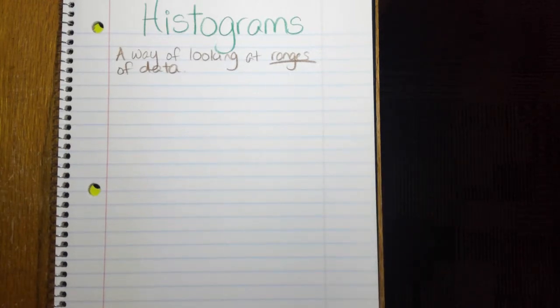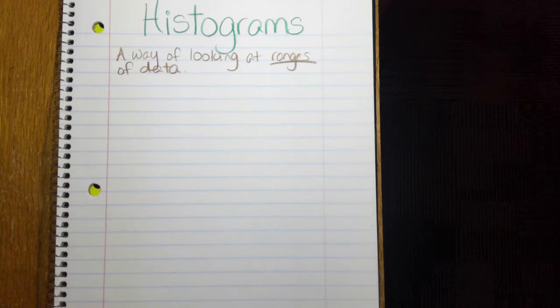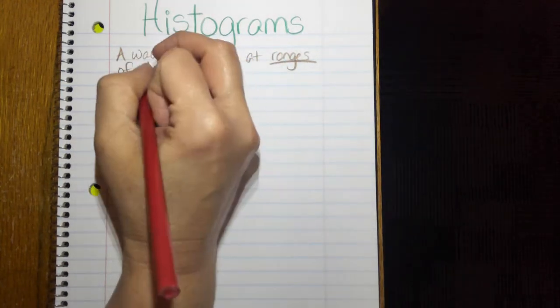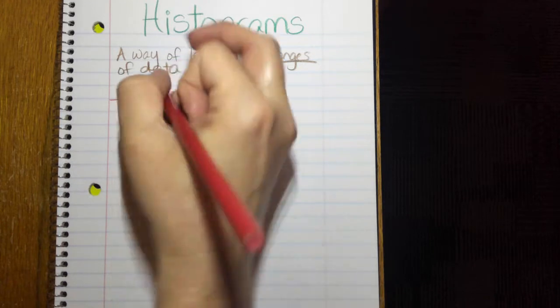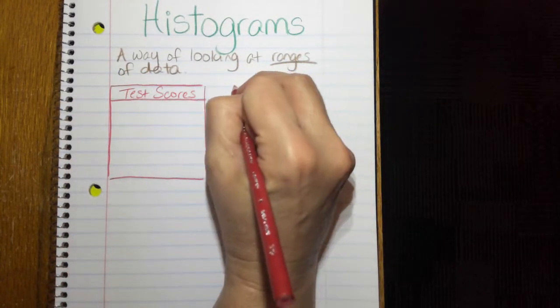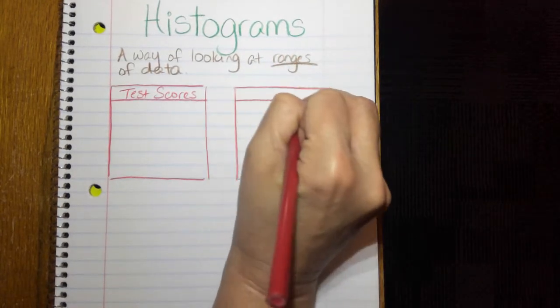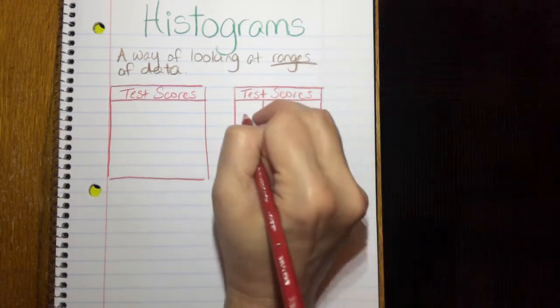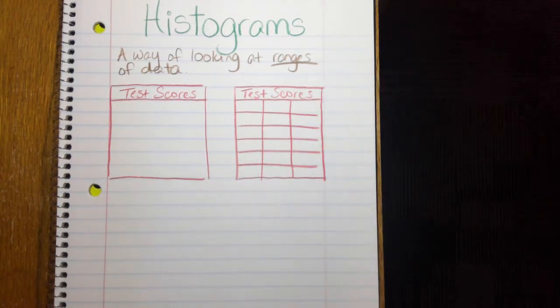So a histogram, first I'm going to give myself some data that would be good to use for a histogram. Now it has to be something that has a range of data. So we're going to do test scores. Let's say that the test scores from the last test that we took.